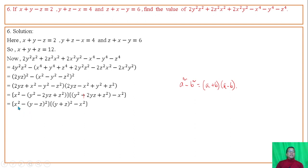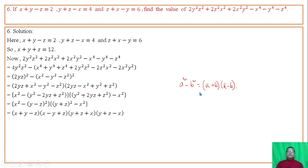Applying a squared minus b squared formula again, the factors become (x plus y minus z) times (x minus y plus z), and (y plus z plus x) times (y plus z minus x). Organizing these factors, we substitute the corresponding known values from the given conditions.